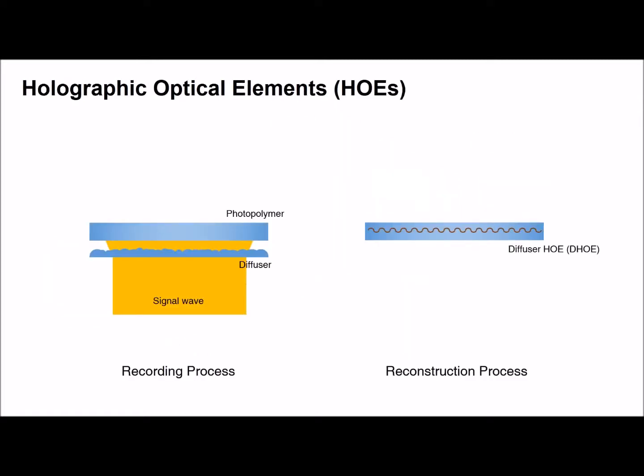Holographic optical element is one of the applications of volume holograms. If a diffusing wave is recorded with a reference wave in the photopolymer, it can be reconstructed by the reference wave front. However, if a different wave is incident on the diffuser holographic optical elements, the wave is not diffracted and passes through the DHOE. In the same way, most of real-world scene passes through the DHOEs without diffraction. Therefore, we could utilize DHOEs as see-through projection screens.